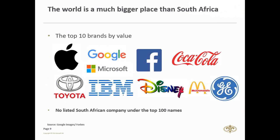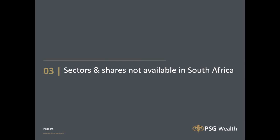The world is a much bigger place than South Africa. The top 10 brands by value compiled by Forbes in 2016 are: Apple, Google, Microsoft, Facebook, Coca-Cola, Toyota, IBM, Disney, McDonald's, and General Electric. Notably, this is the top 10 out of a list of 100 — and not a single South African name listed on the JSE made this top 100 list.